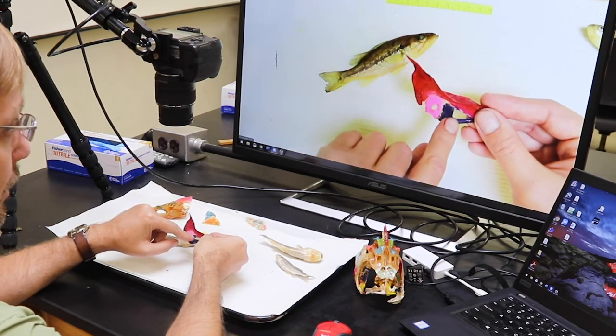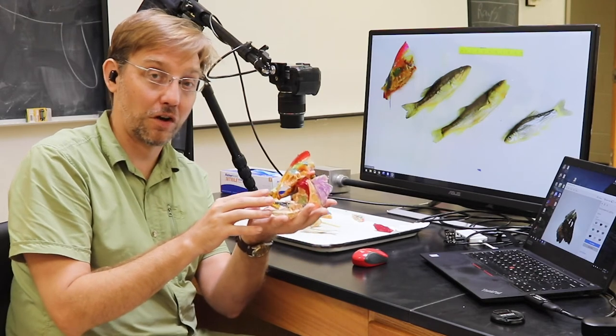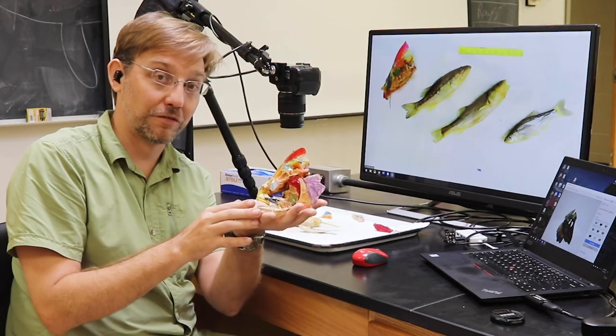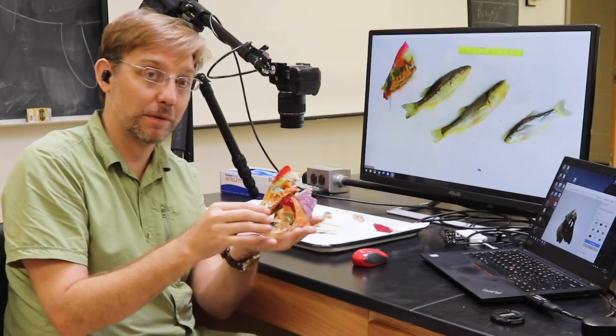One of the other things we do in that class is we look at the bones, the structures that make up the fish's architecture itself. This is a freshwater drum skull. In the past, we would look at these bones in a classroom environment.